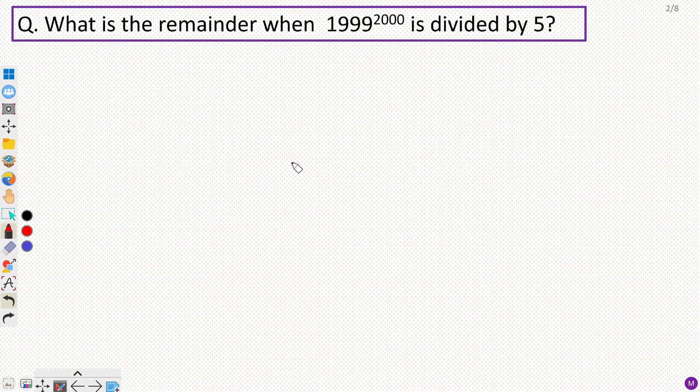Hey everyone. In this video we will discuss a number theory problem involving remainders. The question is what is the remainder when 1999 raised to power 2000 is divided by 5.